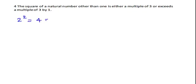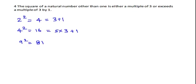The fourth property is that the square of a natural number other than 1 is either a multiple of 3 or exceeds a multiple of 3 by 1. For example, 2 squared equals 4, which can be written as 3 plus 1. 4 squared equals 16, written as 5 × 3 plus 1. 9 squared equals 81, written as 3 × 27 with remainder 0. So, if a number divided by 3 leaves a remainder of 2, then it is not a perfect square.